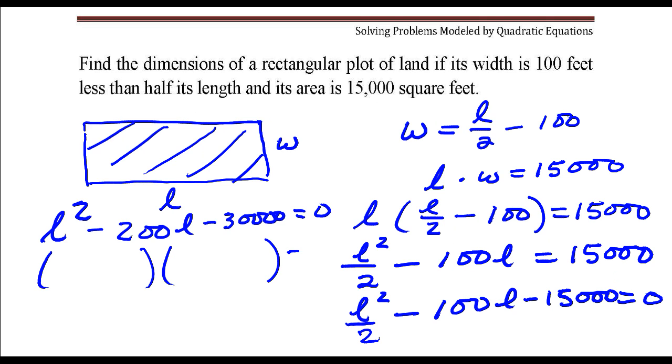So to factor this into a product of two binomials, we need to find two numbers whose product is negative 30,000 but whose sum is negative 200. And I'm going to use the numbers 100 and 300. And we're going to make this one negative and this one positive.